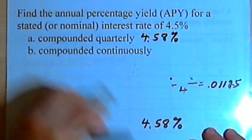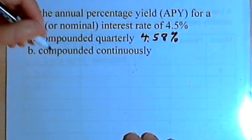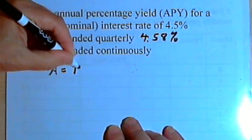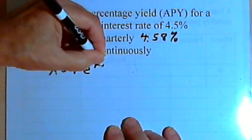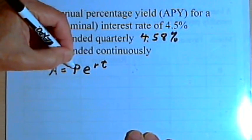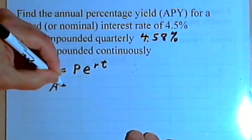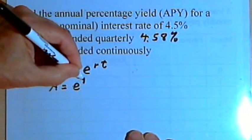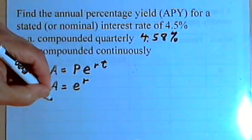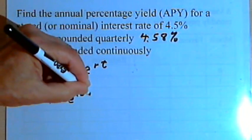Let's do the compounded continuously part of this. The formula for compounded continuously is A equals P times e to the rt. Once again, let's assume that P is one dollar and the time is one year. So we don't need the P or the t. Now we've just got A equals e to the r, and r is 4.5 percent as a decimal, so that's A equals e to the 0.045.